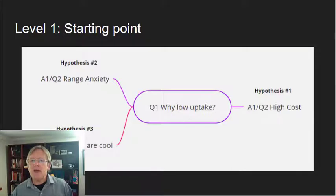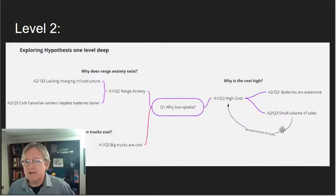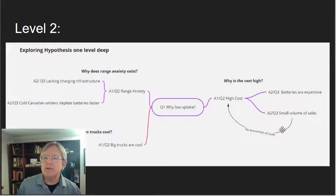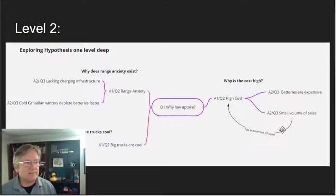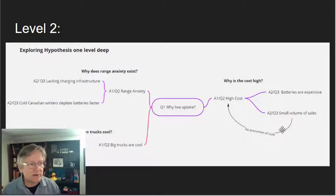So it starts with our high level question, why is the uptake low? And some possible answers that we brainstorm. Think of these as hypotheses. So as we pursue these three hypotheses, we can begin to understand range anxiety and the cost equation. So range anxiety is really, why does that exist? Because we have a lack of a charging infrastructure, perhaps, or that cold Canadian winters deplete batteries faster.